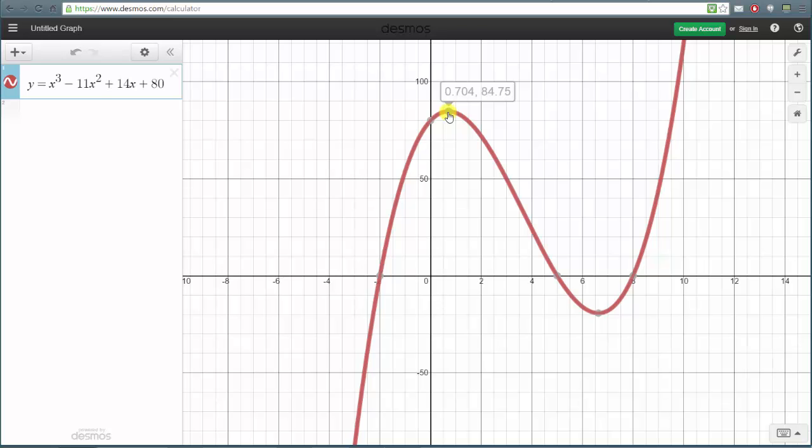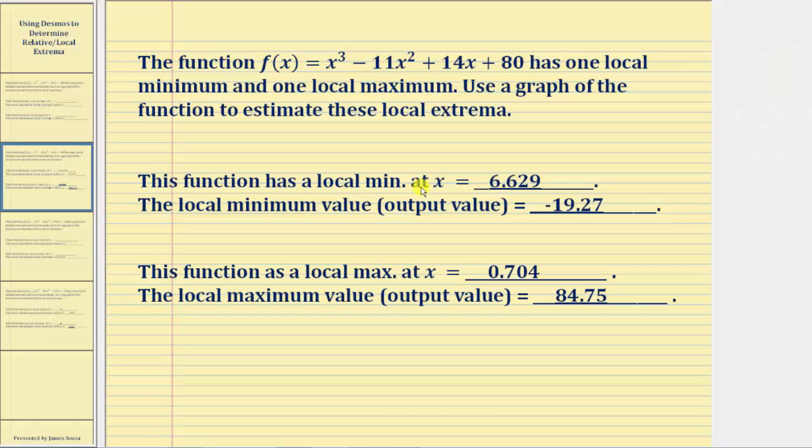Let's go back and record this information. The function has a local minimum at approximately 6.629, and the local minimum value or output value, which is the y-coordinate, is approximately negative 19.27. The function has a local maximum at approximately x equals 0.704, and the local maximum value or output value, which is the y-coordinate, is approximately 84.75.